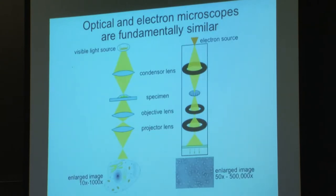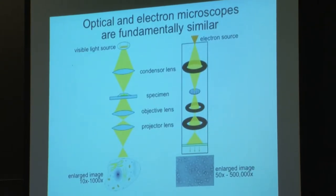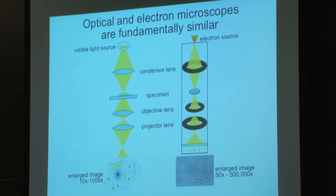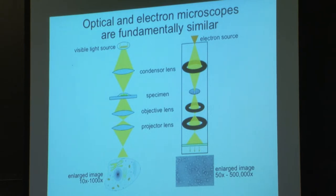If you've used a light microscope, the electron microscope is conceptually very similar. You've got the light source at the top versus an electron source. A condenser lens will focus that on the specimen. The objective lens forms the image; it's magnified by the projector lens, and what you get is an enlarged image — so you can see things you couldn't see by eye. A light microscope can get up to about 1,000x, and an electron microscope can go up to 500,000x or even beyond.